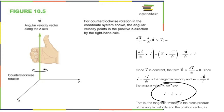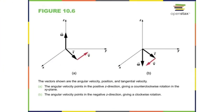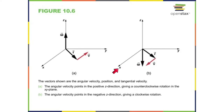That same thing is shown in the diagram. Velocity, radius — and you get omega. That's the right-hand rule. But if it's turning in the opposite direction — clockwise — the angular velocity is now downwards.